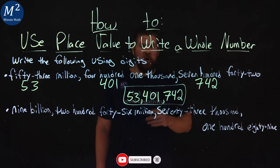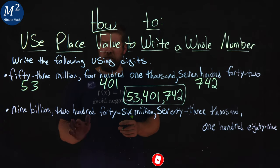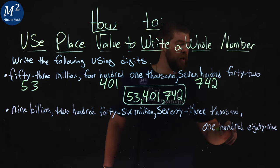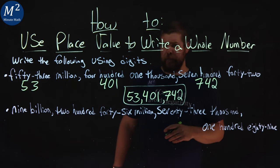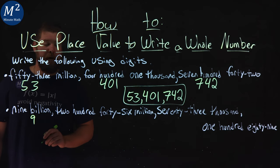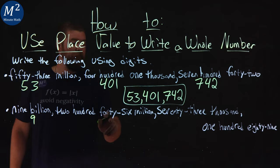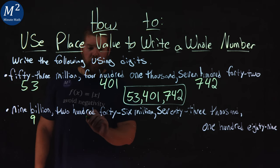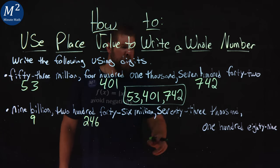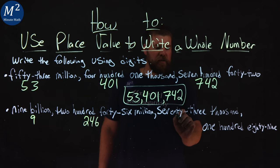The next one's a little more difficult. 9,246,073,189. Same thing, 9 billion. We just have 9 here. I put a 9. 246 is all I'm worried about right now. 73,000 is just 73 here.